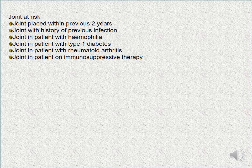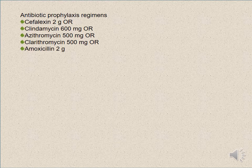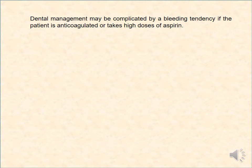Not all joints require antibiotic cover. At-risk joints include those placed within the previous two years, joints with a history of previous infection, joints in patients with haemophilia, joints in patients with type 1 diabetes, joints in patients with rheumatoid arthritis, and joints in patients on immunosuppressive therapy. The antibiotic prophylaxis regimes include cefalexin 2g orally, clindamycin 600mg orally, azithromycin 500mg orally, or cefazolin 2g IV or IM.